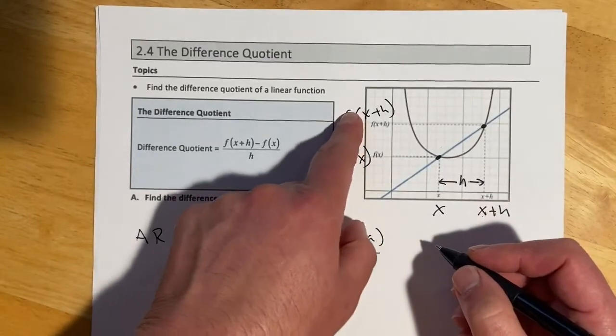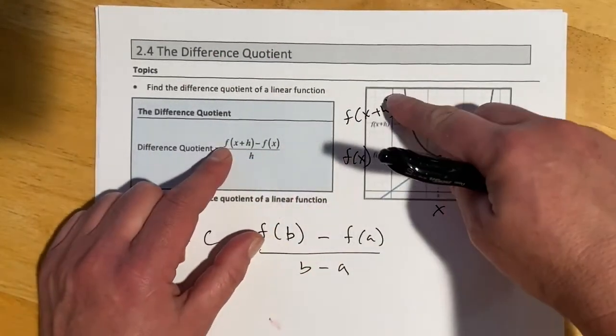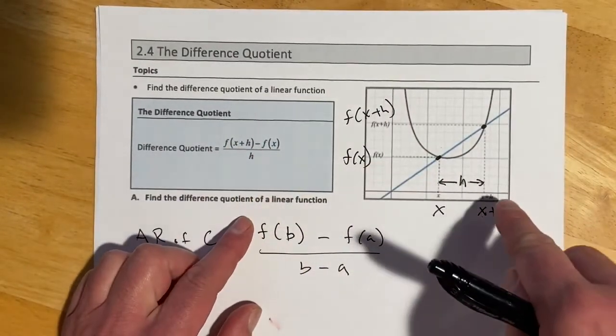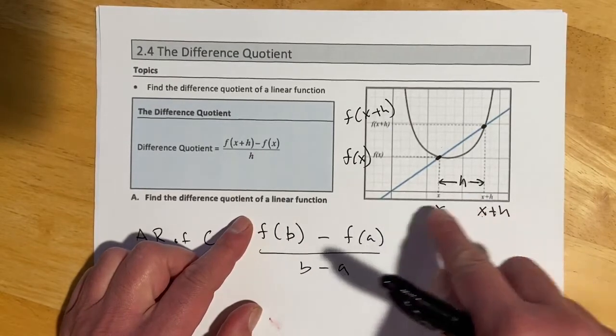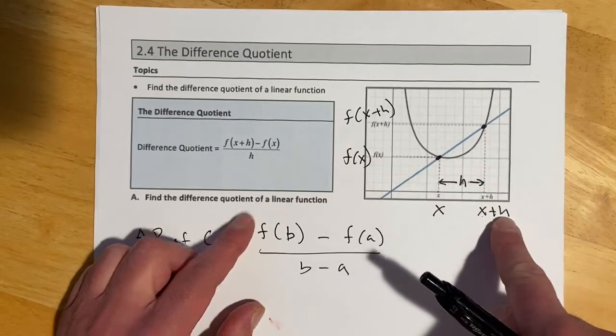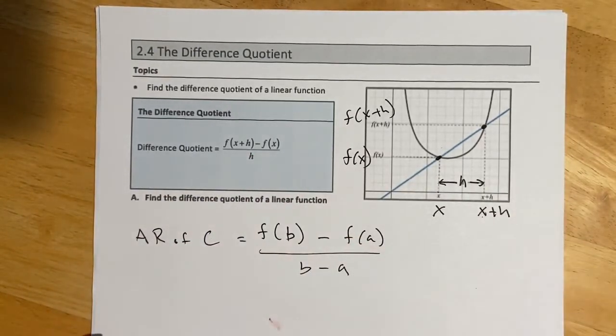So here we're putting, at this point, we're putting in x and we're getting out f of x. And then this distance h. So we're going from wherever this is, some distance h over to here, which makes x plus h. And then when we put that in, what we get out is f of x plus h.